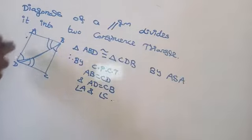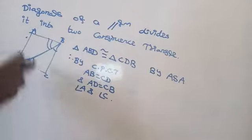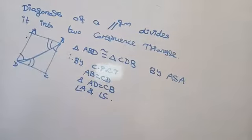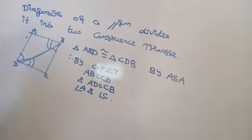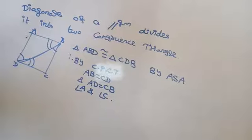If you are considering diagonal AC, then you can say that angle B equal to angle D. So in a parallelogram, two pairs of opposite sides are equal and two pairs of opposite angles are equal. The next property: diagonals bisect each other.